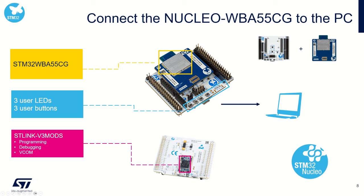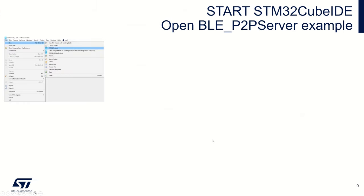If you look on the other side of your board, you will see another chip which is an ST-Link. This is our debug and flash probe. We will use it to flash and debug, but also as a USB-to-UART interface to output some logs, for example. So let's start now with the BLE peer-to-peer server.